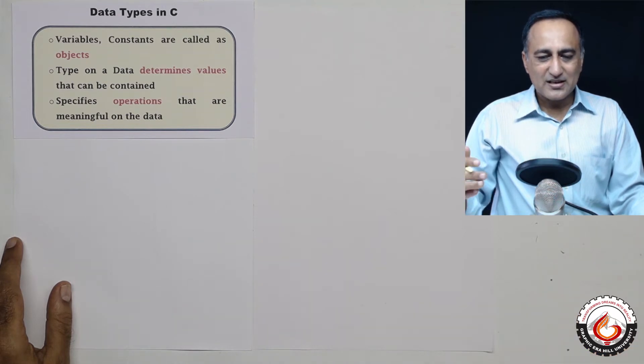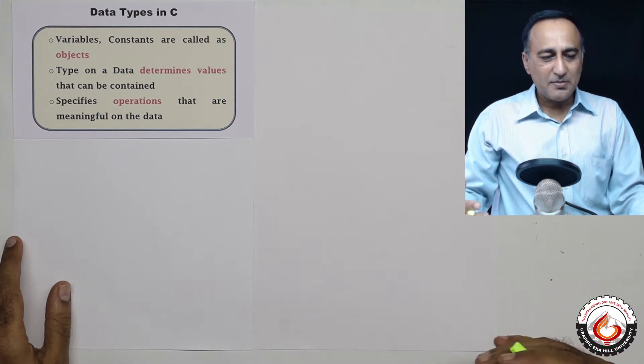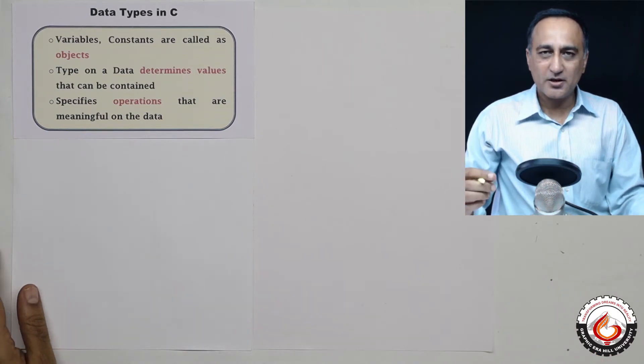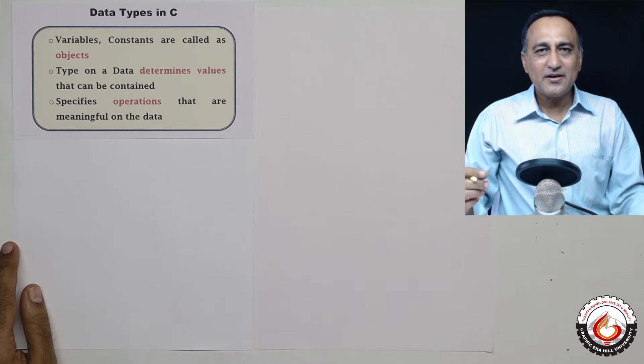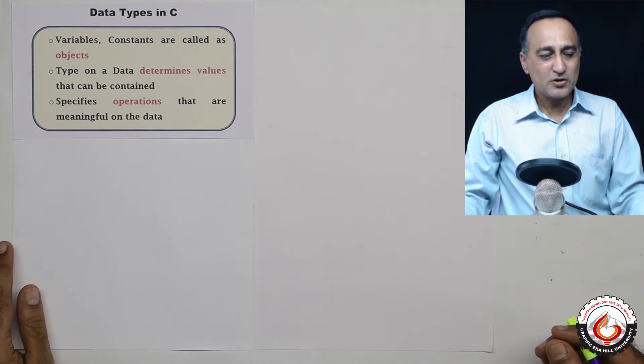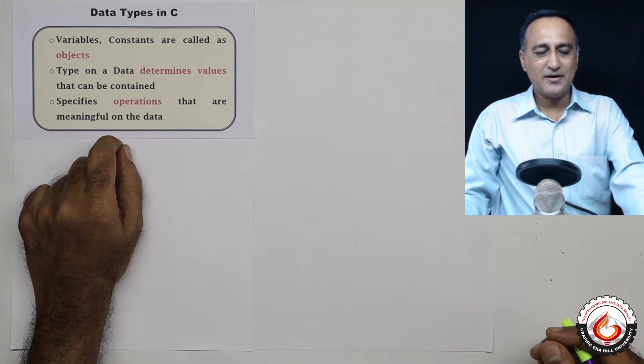Why is the type of data very important in programming? The type of data determines what values can be stored in that particular object or variable. For example, if the data type is characters, I can only store addresses there. In a character type of data, I cannot store somebody's age, it's meaningless. The type of data determines the values that can be contained.